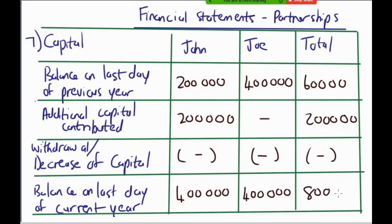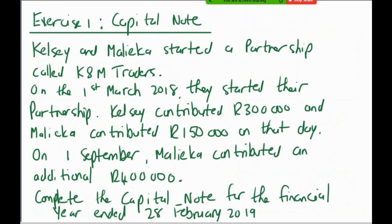Our totals: 200,000 plus 400,000 = 600,000 at the beginning of the year, an additional 200,000 contributed, and our balance at the end of the financial year is 800,000. When I add down and add across I must get to the same amount. The 800,000 is the amount that will appear in the owner's equity section of the balance sheet.